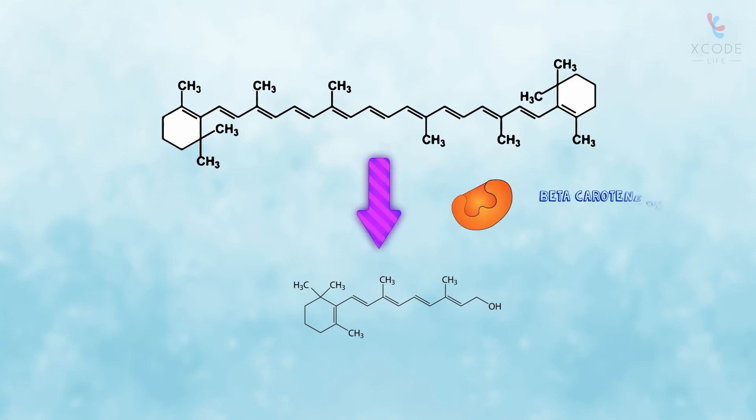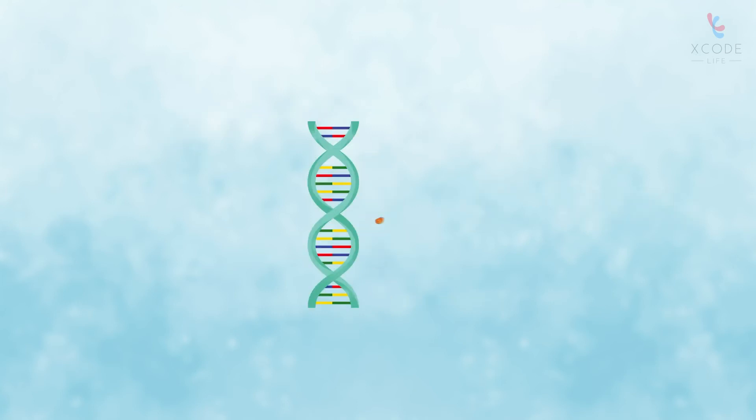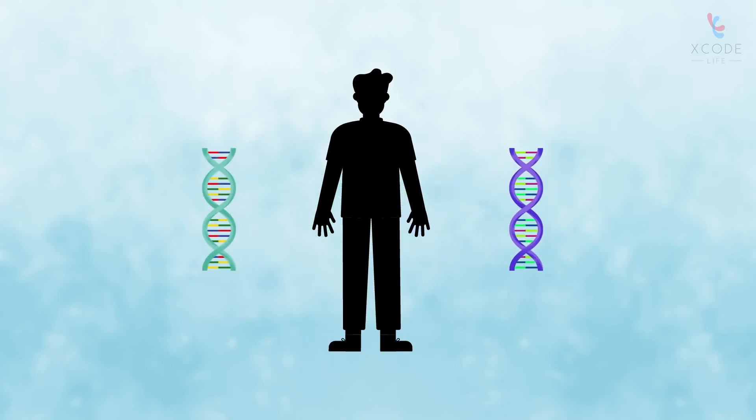By an enzyme called beta-carotene oxygenase, or monooxygenase. This enzyme is produced by the gene called BCMO1 or BCO1. Every person has two copies of the BCMO1 gene.